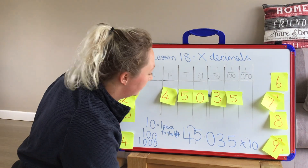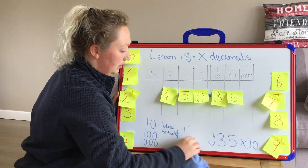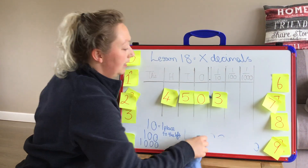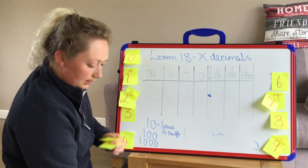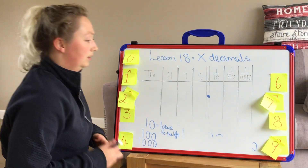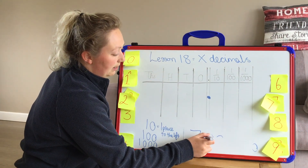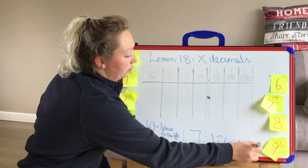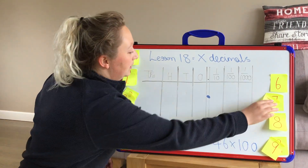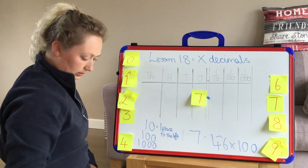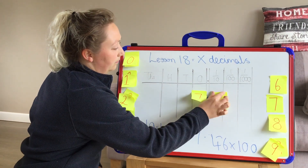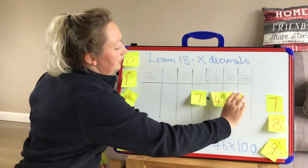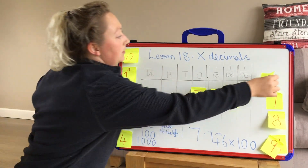Okay, let's see if we can see a pattern. Let's think of another number. Let's have 7.46, and we're going to times it by 100 now. So we've got 7.46.